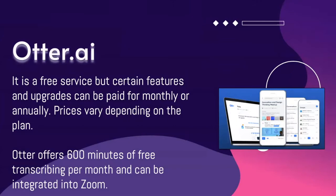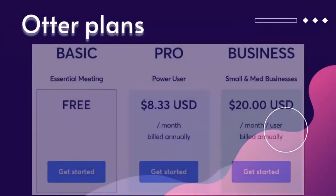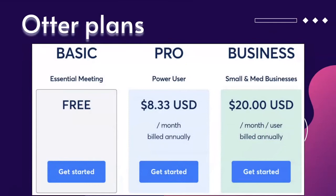Otter.ai is a free service, but certain features and upgrades can be paid for monthly or annually — prices vary depending on the plan. Otter offers 600 minutes of free transcribing per month and can be integrated into Zoom. The basic plan is free, the Pro goes for $8.33 in the U.S., and the Business plan is $20 in the U.S.